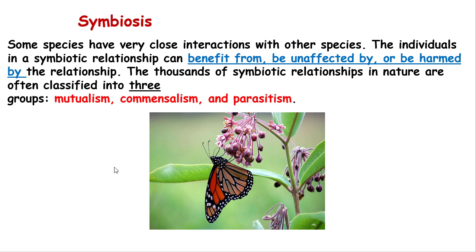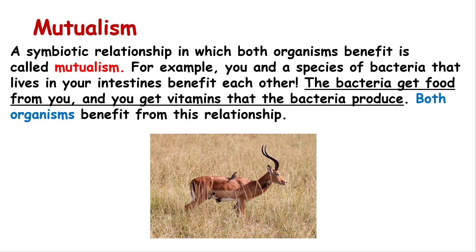Symbiosis is very important for this section — you have to know it very well. Some species have very close interactions with other species. In a symbiotic relationship, organisms can benefit from each other, be unaffected, or harm each other. The thousands of symbiotic relationships in nature are classified into three main groups: mutualism, commensalism, and parasitism.